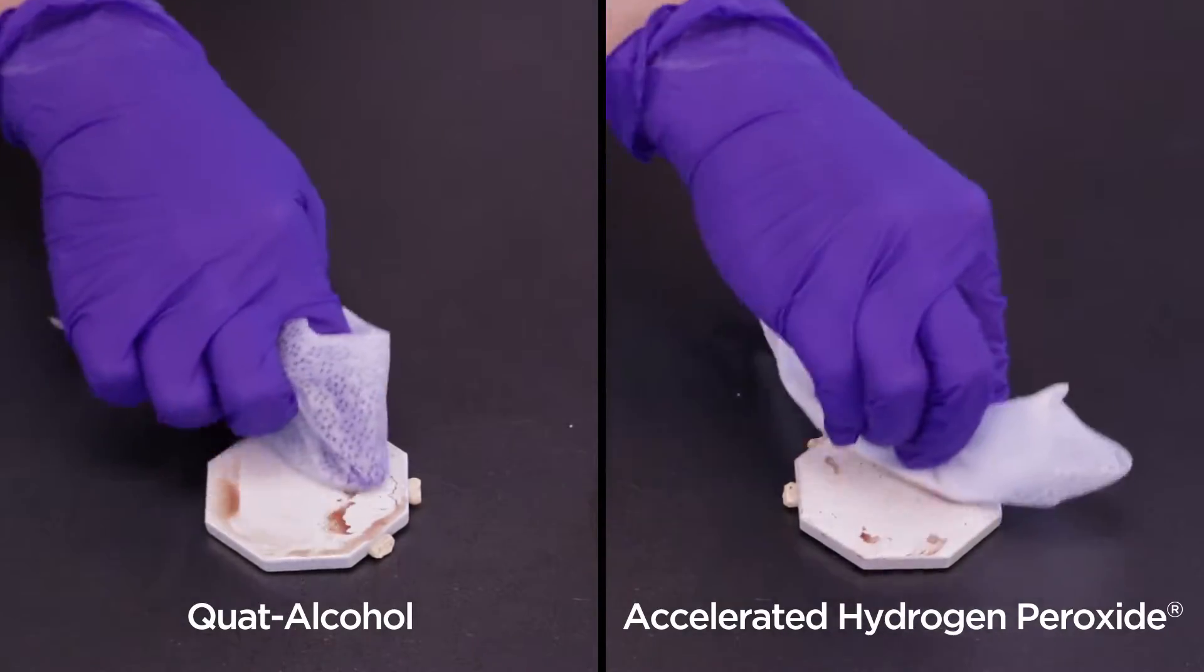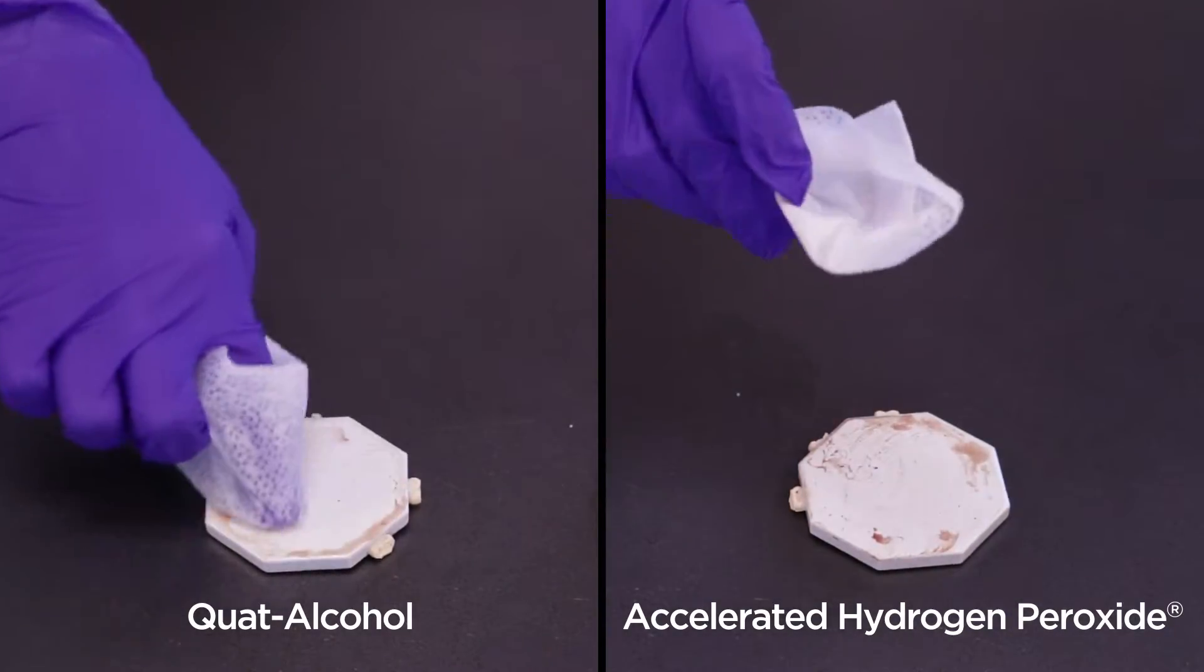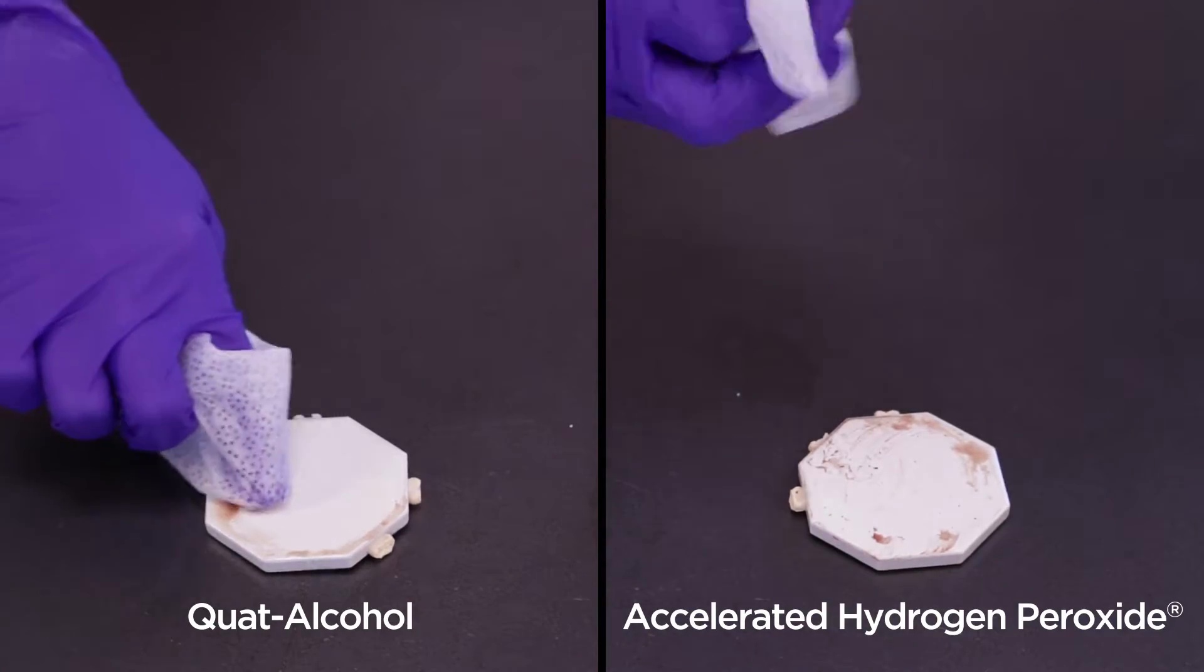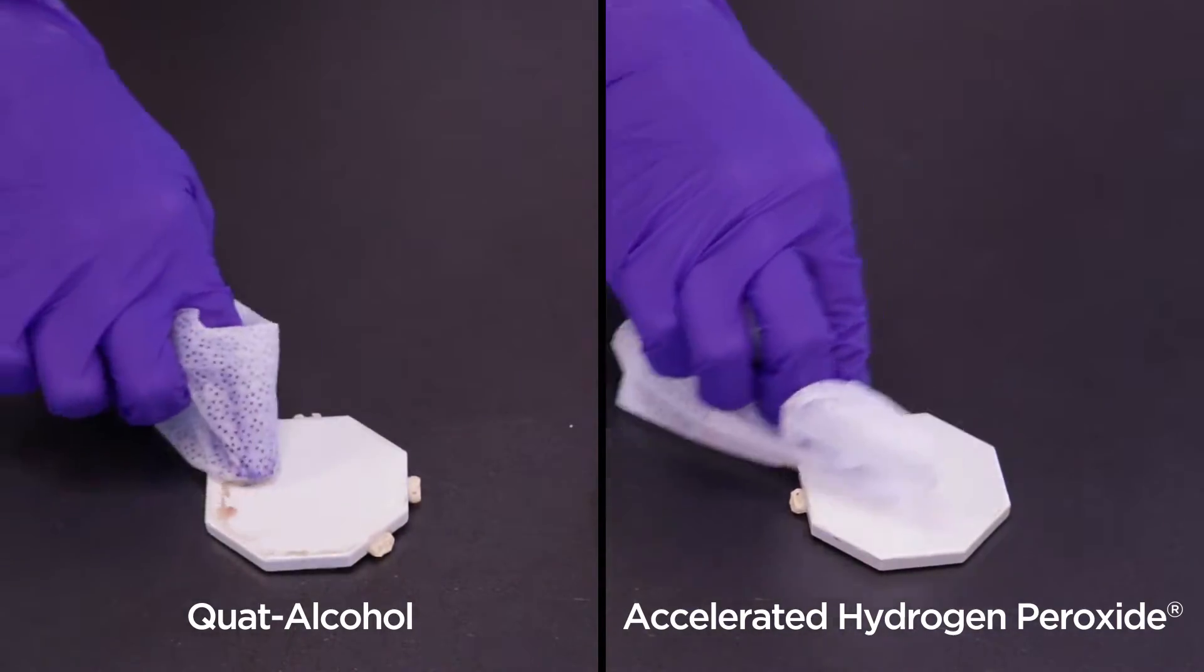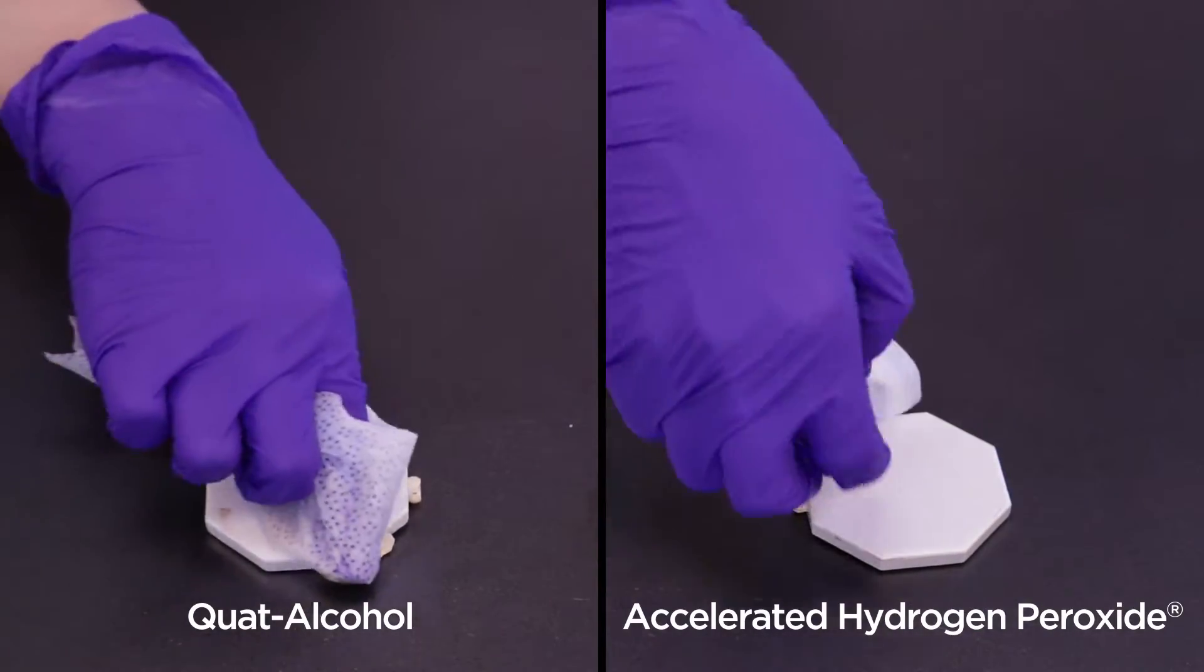Hemostyx reacts to the presence of blood through the detection of hemoglobin. The detection of hemoglobin will result in a positive reading. No detection of hemoglobin will result in a negative reading.